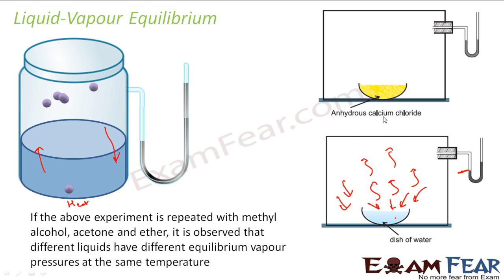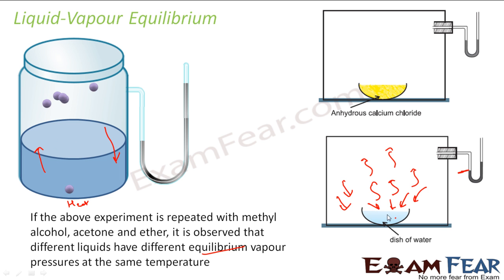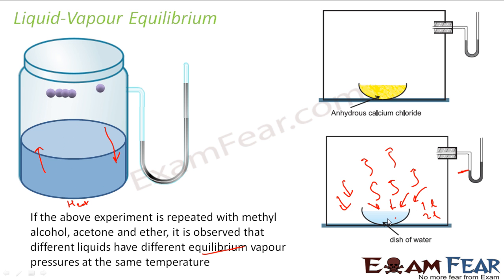If the same experiment is repeated with methyl alcohol or acetone or ether, it is observed that different liquids have different equilibrium vapor pressures at the same temperature. If you take water, the mercury level will be at one position; if you take methyl alcohol or acetone, it will be somewhere different. This proves that vapor pressure is dependent on the chemical property of the substance. Also note that vapor pressure is independent of the amount of liquid — whether you take one liter or two liters, you get the same value.